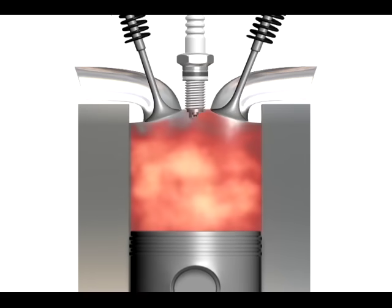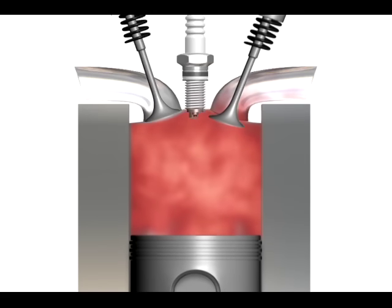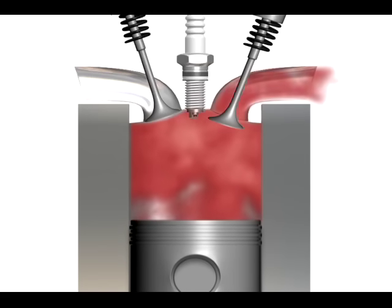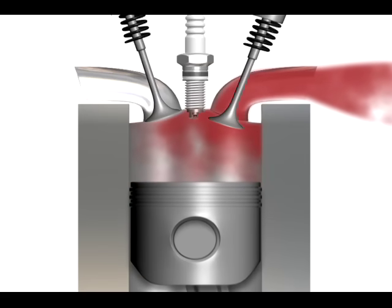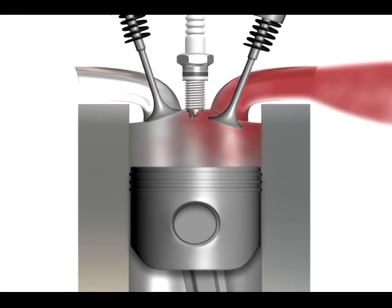The fourth stroke is the exhaust stroke. As the piston begins its second upward stroke, the exhaust valve opens and the burned air-fuel mixture is forced out of the combustion chamber through the exhaust valves.